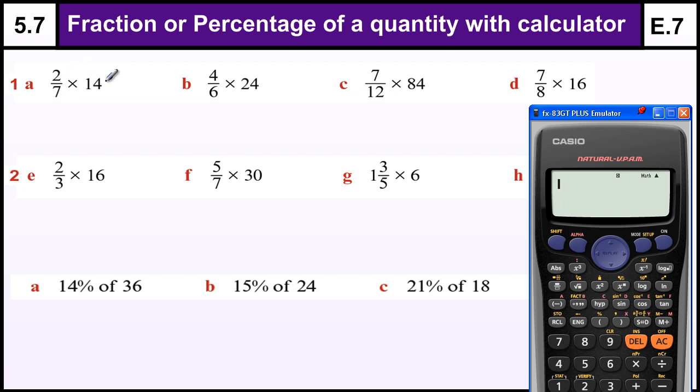So when we're trying to find a fraction times something, we just divide by the bottom times by the top, or in some cases we times by the top and divide by the bottom. 14 divided by 7 is 2, times by 2 is 4. 24 divided by 6 is 4, times 4 is 16. 84 divided by 12 is 7, times 7 is 49. And 16 divided by 8 is 2, times 7 is 14.